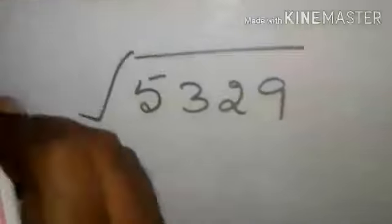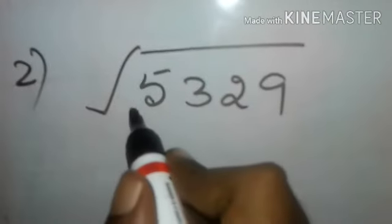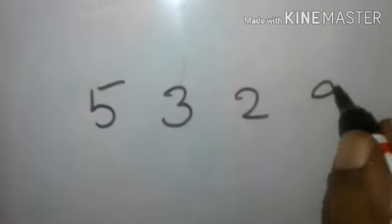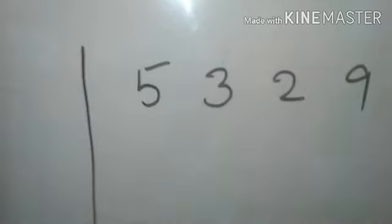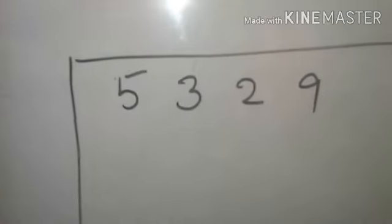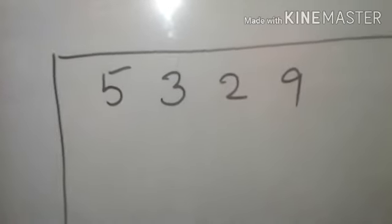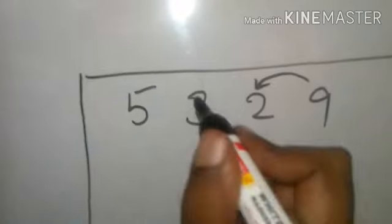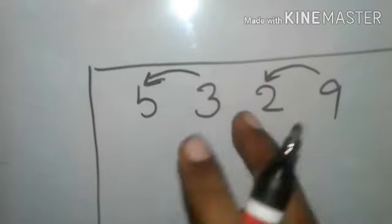Second question. Let's check this number. Square root of 5329. So what was the first step? First step, you'll have to mark the pairs from the right side.